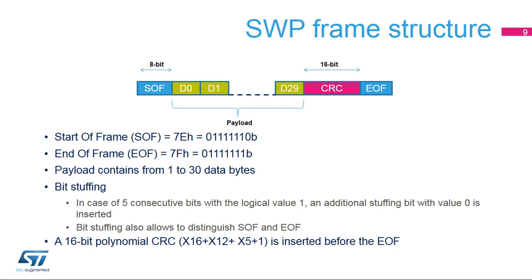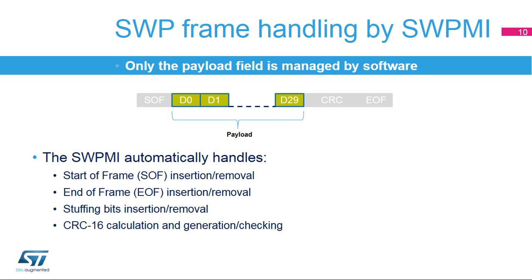SWP frames start with a start of frame field, coded by a 0x7E byte in hexadecimal format, and end with an end of frame field, coded by a 0x7F byte in hexadecimal format. The payload contains between 1 and 30 bytes of data. The protocol also implements bit stuffing: an extra bit is inserted in case of 5 consecutive bits at 1, guaranteeing that the start and end of frame fields are distinguished from the payload bytes. Data integrity is guaranteed by a 16-bit polynomial cyclic redundancy check, or CRC. The SWPMI automatically handles the start and end of frame fields, stuffing bits, and the CRC.